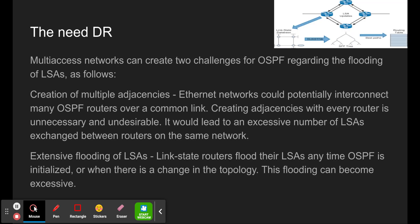Multi-access networks create two challenges for OSPF regarding the flooding of LSAs. The first is the creation of multiple adjacencies — Ethernet networks could potentially interconnect many OSPF routers over a common link, and creating adjacencies with every router is unnecessary and unscalable, leading to an excessive number of LSAs exchanged between routers on the same network. The second is excessive flooding of LSAs, as link state routers flood their LSAs whenever OSPF is initialized or when there is a change in the topology link.